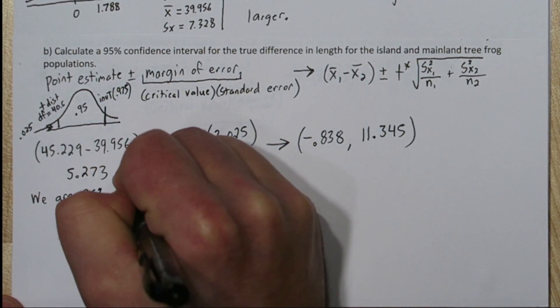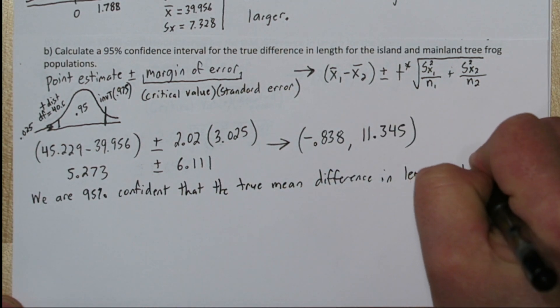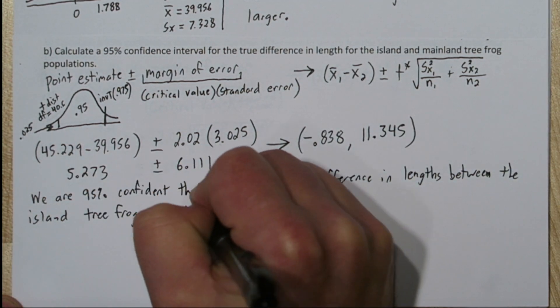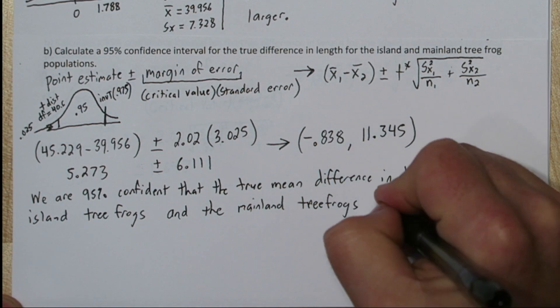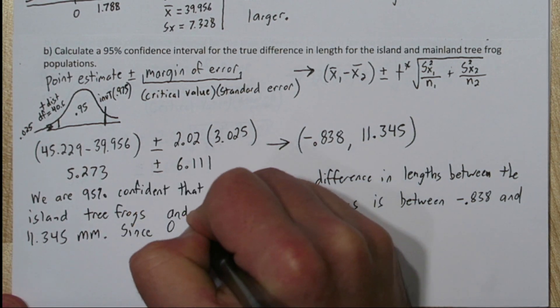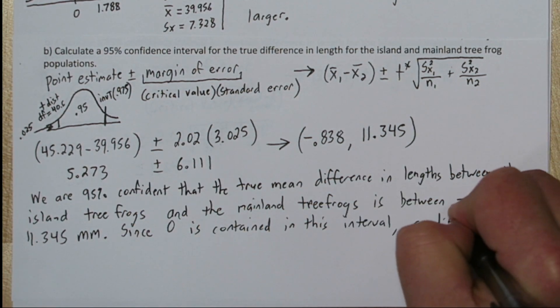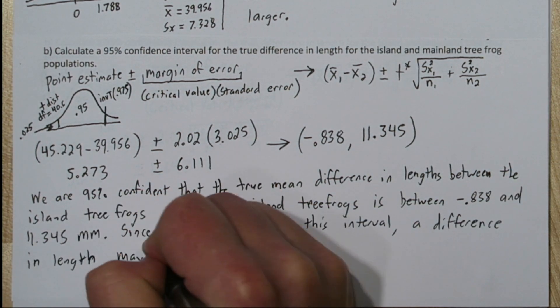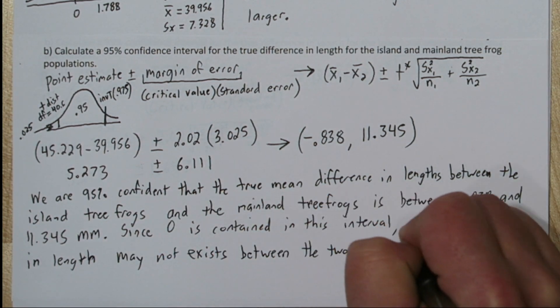So let's interpret this confidence interval. We are 95% confident that the true mean difference in lengths between the island tree frogs and the mainland tree frogs is between negative 0.838 and 11.345 millimeters. Since zero is contained in this interval, a difference in length may not exist between the populations.